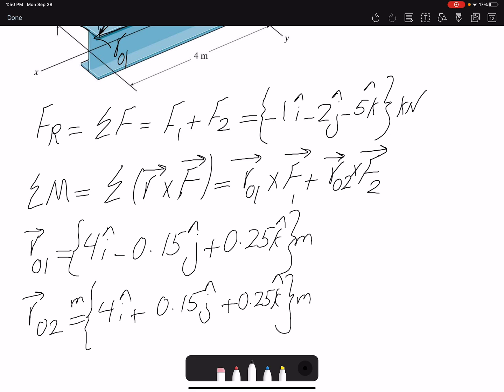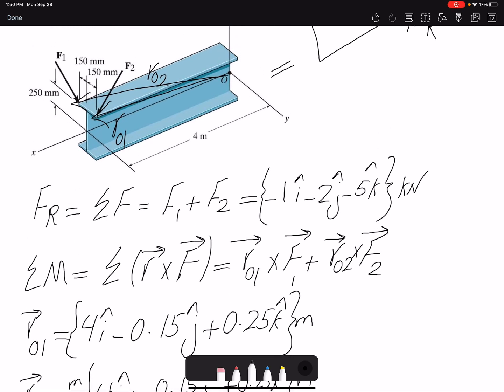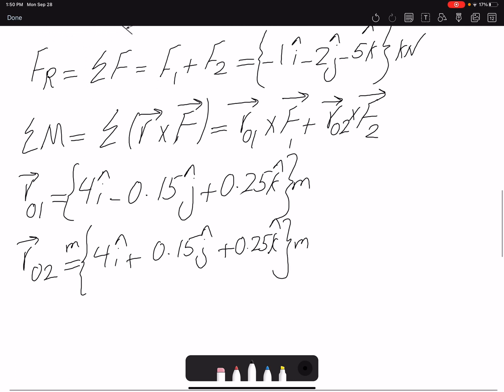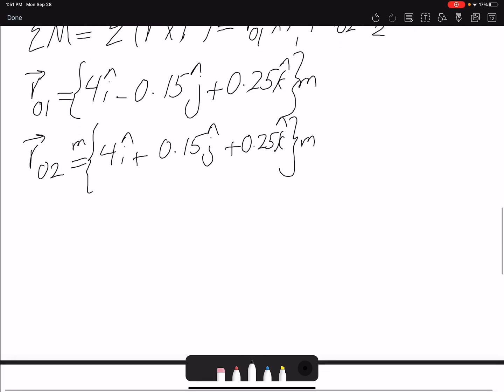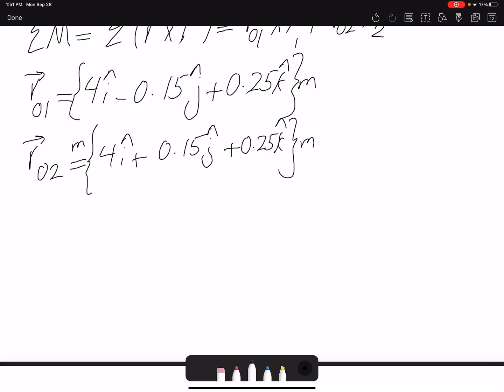So I found the position vectors. Here I connected 1 to 2 and then the other way around. So let me correct the naming. From origin to force 2. So that would be R_O2 and then that would be R_O1. So now that I have the position vectors, I have the force vectors. So MR would be simply summation of moment or addition of the cross products.